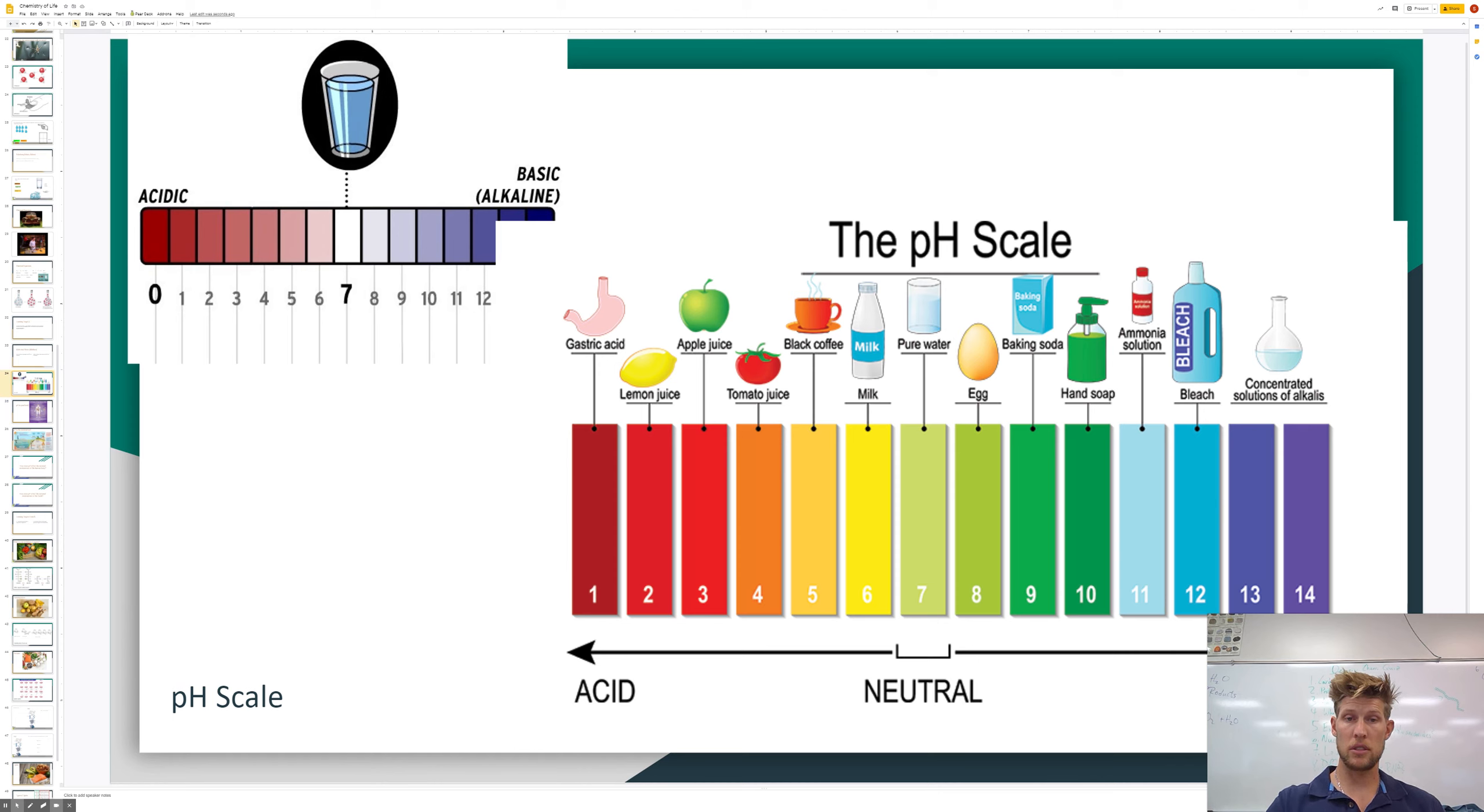So right here on this scale you have a few different things like your gastric acid can be from anywhere from one to four depending on what you're eating. Lemon juice is a two. Apple juice, tomato juice. I think it's so interesting that people that eat a lot of spicy food. Spicy food is going to be down in here as well. Anything that's sour is going to be acidic.